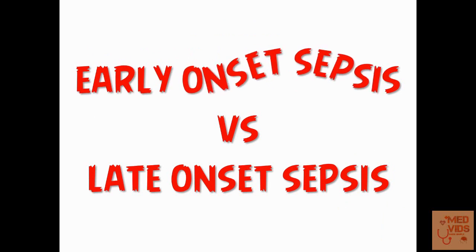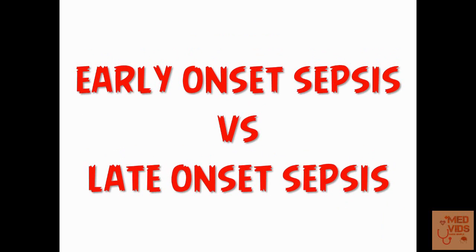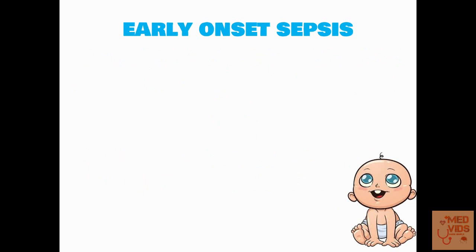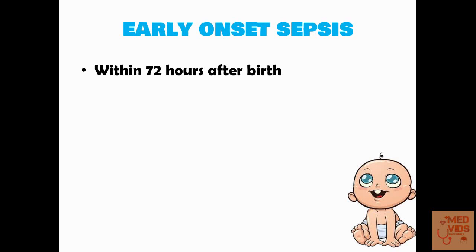Let's discuss the concepts of early onset sepsis and late onset sepsis. Early onset sepsis is that which occurs within 72 hours after birth. In early onset sepsis, the child mostly develops the infection during the time of birth. What are the possible ways to get infection during the time of birth?